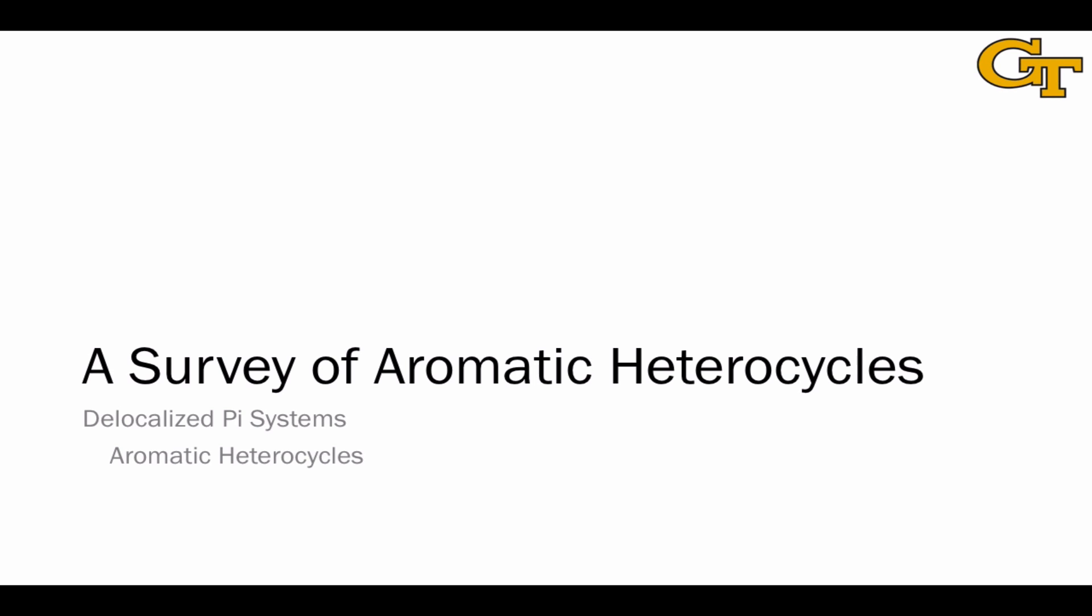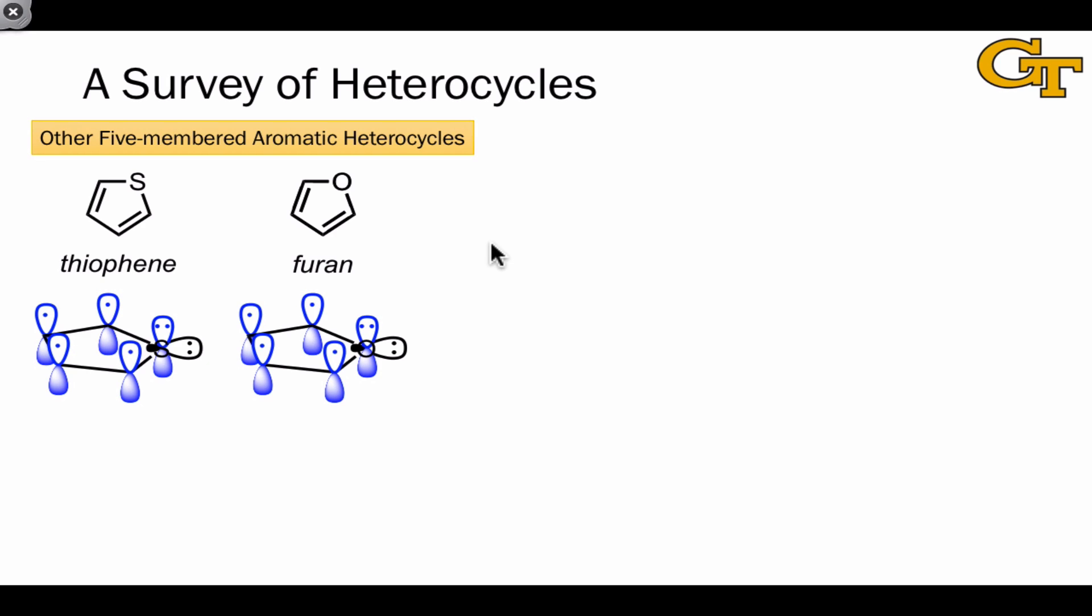This video is a quick survey of the most important types of aromatic heterocycles. Five-membered heterocycles other than pyrrole include thiophene and furan.